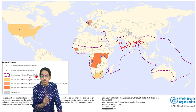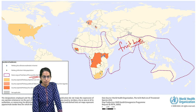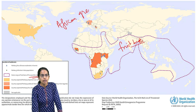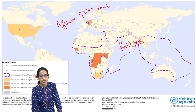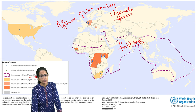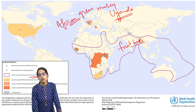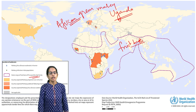The first cases of Marburg virus had been identified in the African green monkey. These African green monkeys had been imported from Uganda for laboratory purposes, and through those, the Marburg virus cases were reported.